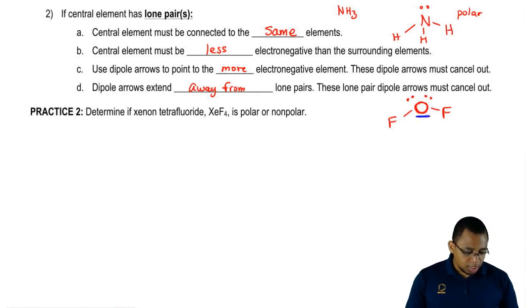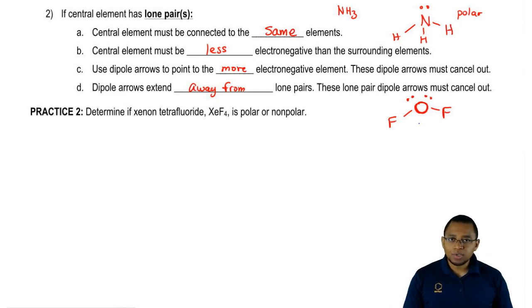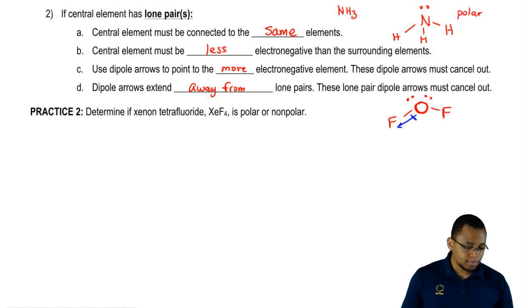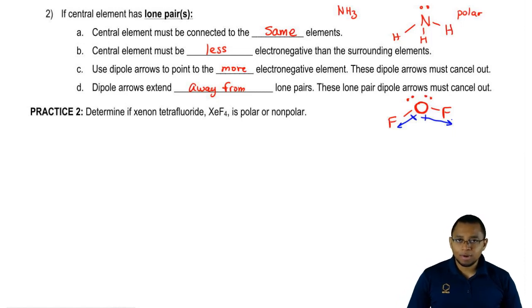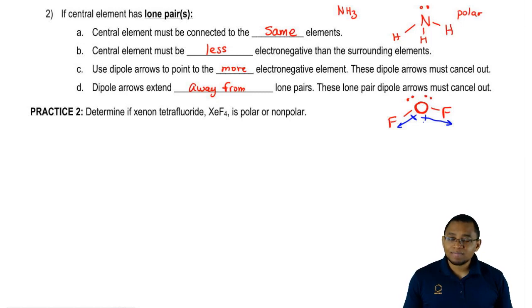We look at the oxygen and the first fluorine. We draw a dipole arrow between the two, pointing toward whoever is more electronegative. Fluorine is more electronegative, so we point a dipole arrow towards it. Then we look at the oxygen and the other fluorine — again the dipole arrow points towards that fluorine. These two element dipole arrows are pointing in opposite directions, so they cancel each other out. Part C is followed.